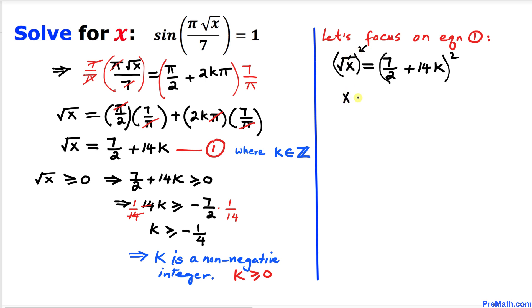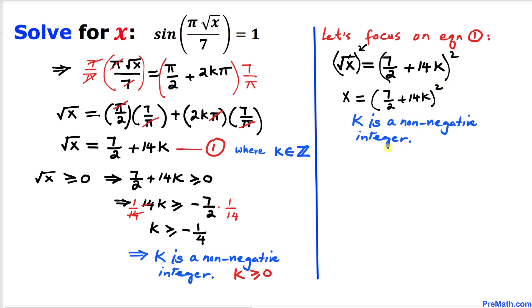So x turns out to be 7 divided by 2 plus 14k, whole squared, where k is a non-negative integer.